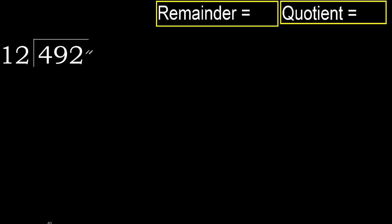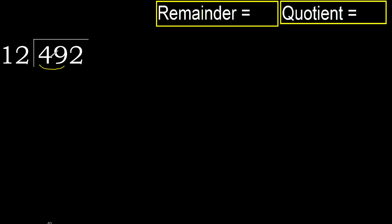492 divided by 12. 4 is less than 12, therefore we move to the next digit. 49 is not less than 12, therefore we work with 49.